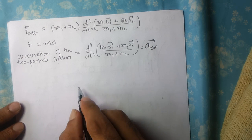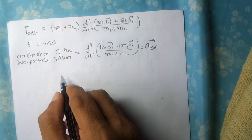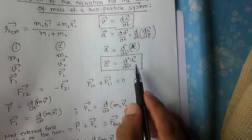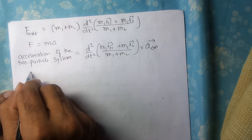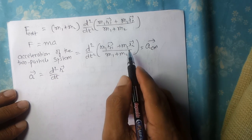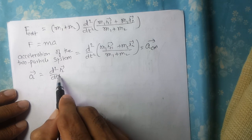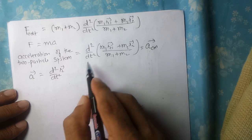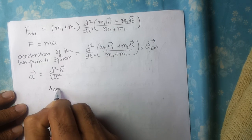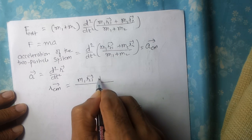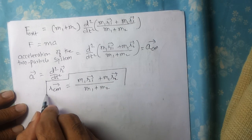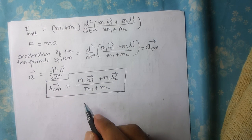Now if I look at the equation from the beginning of the video — A equals d²R by dt² — and compare it with our expression, where we have ACM equals d²/dt² of (M1R1 plus M2R2) upon (M1 plus M2), then by comparison this entire expression must be RCM. So we arrive at RCM equals M1R1 plus M2R2 upon M1 plus M2. And this is how we derive the equation for the position vector of the center of mass of the two-particle system.